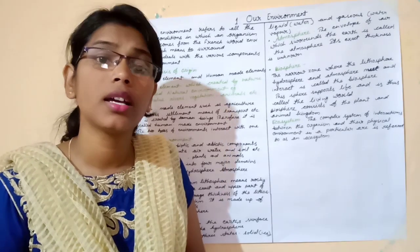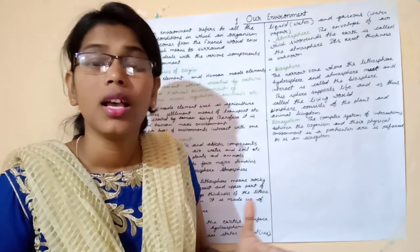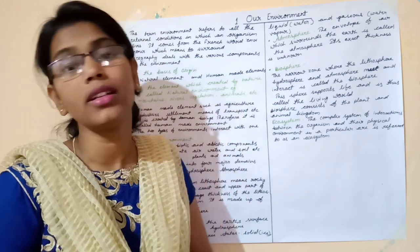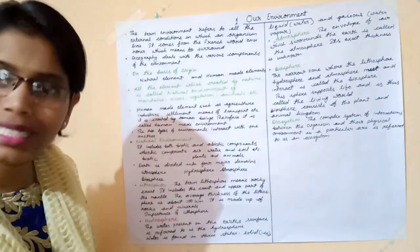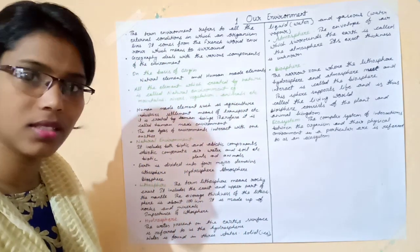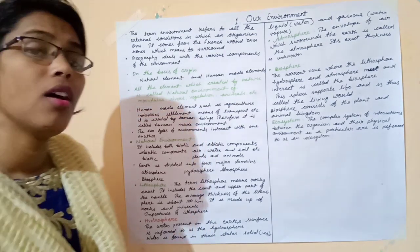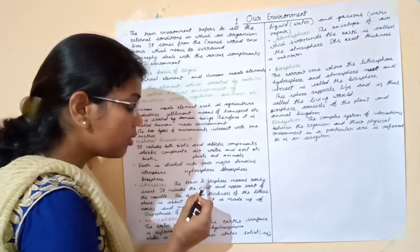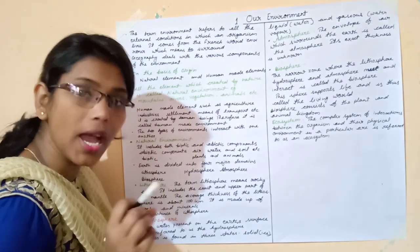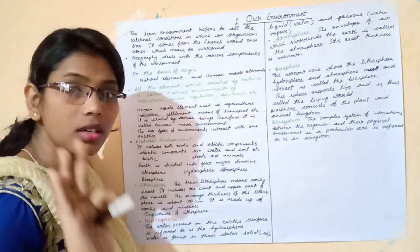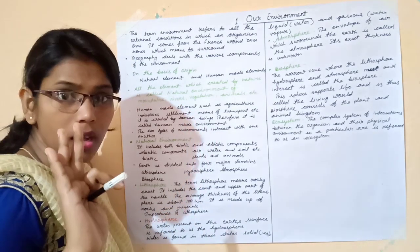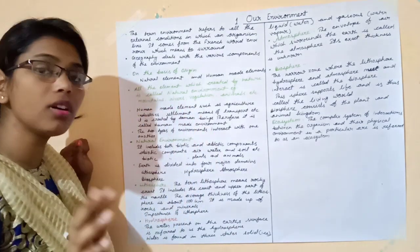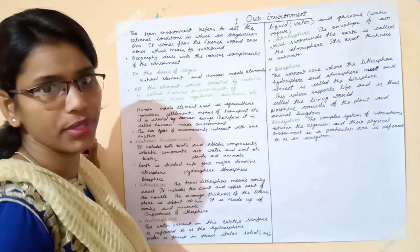Our earth is divided into four major domains, which we discussed in the last class. First is the lithosphere. Second is the hydrosphere. Third is the atmosphere. And the fourth is the biosphere.